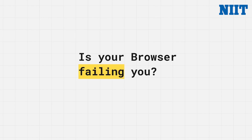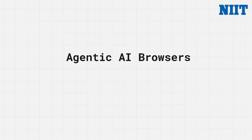What if your browser could do more than just display information? What if it could understand your goals and act on them for you? This is the promise of a new category of software called agentic AI browsers. The agentic part means it has agency — the ability to act independently. Instead of being a passive window, it's an active partner. Think of it less like a tool and more like a super smart digital intern who you can delegate tasks to.